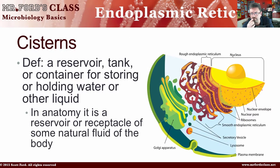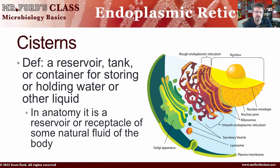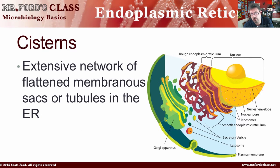Another thing we need to talk about is a cistern. When students are learning microbiology, anatomy, or any sciences, they tend to get overwhelmed by terms. A cistern is not a specific term to biology. By definition, a cistern is a reservoir, a tank or container for storing or holding water or other liquids. When people start naming things in the human body or in biology, they look for existing terms they can associate with what we find in our sciences. So in anatomy, a cistern is a reservoir or receptacle for some natural fluid in the body. It's an extensive network of flattened membranous sacs or tubules in the ER.